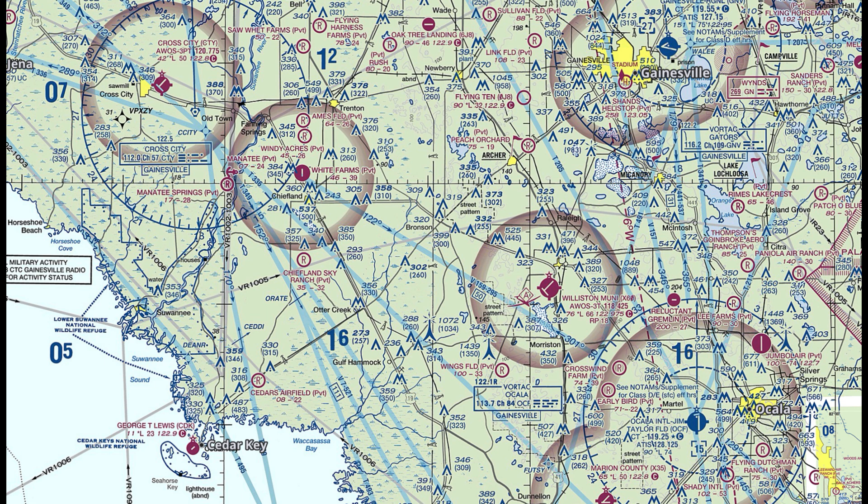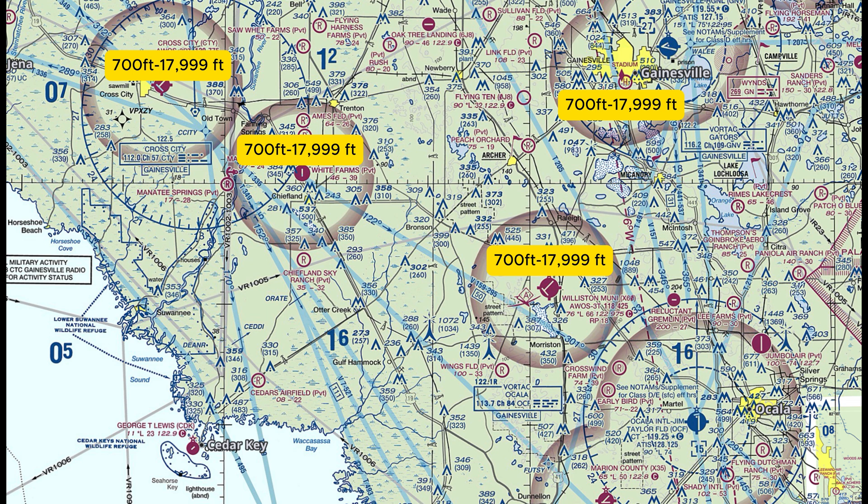Now we'll look at the shaded magenta lines. These are known as the class echo transition airspace and they exist to provide safe and efficient transition for instrument flight rules, or IFR, traffic operating between the en route and terminal environment. It ensures that the controlled airspace extends low enough to protect IFR flights during approaches, departures, or climb out from an airport. It also allows air traffic control to manage IFR aircraft in critical phases of flight when they are closer to the ground, maintaining communication until the pilot can safely identify the airport or have it in sight after descending from ceilings or bad weather. Class echo transitions start from 700 feet and go all the way up to but not including 18,000 feet.